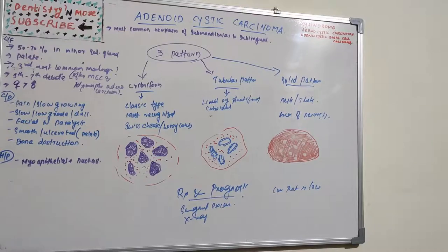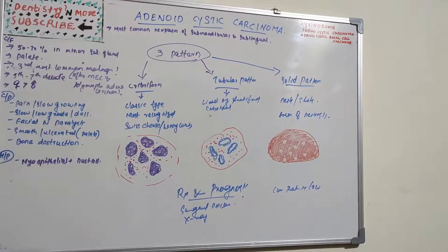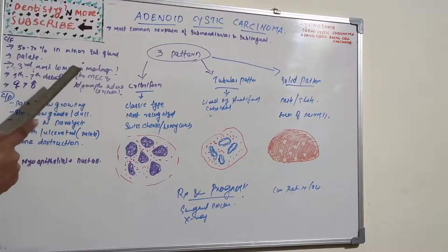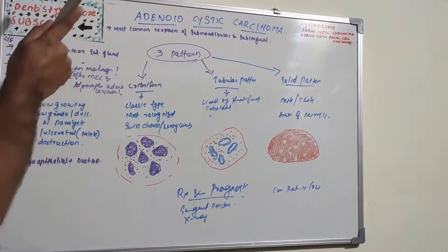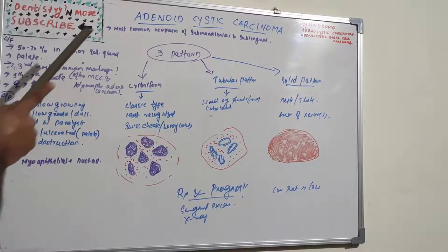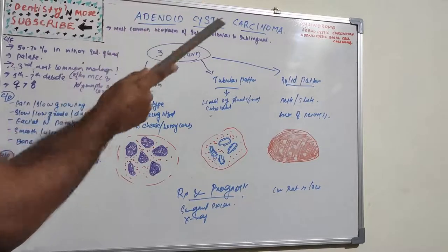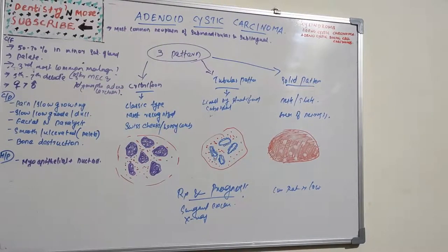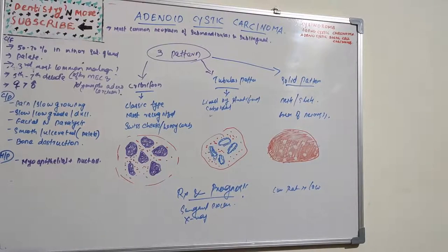50 to 70 percent of cases are seen in minor salivary glands, with the palate being the most common site. It is the third most common malignant neoplasm of the salivary gland, after mucoepidermoid carcinoma and polymorphous adenocarcinoma. It is most commonly seen between the fifth to seventh decade of life.